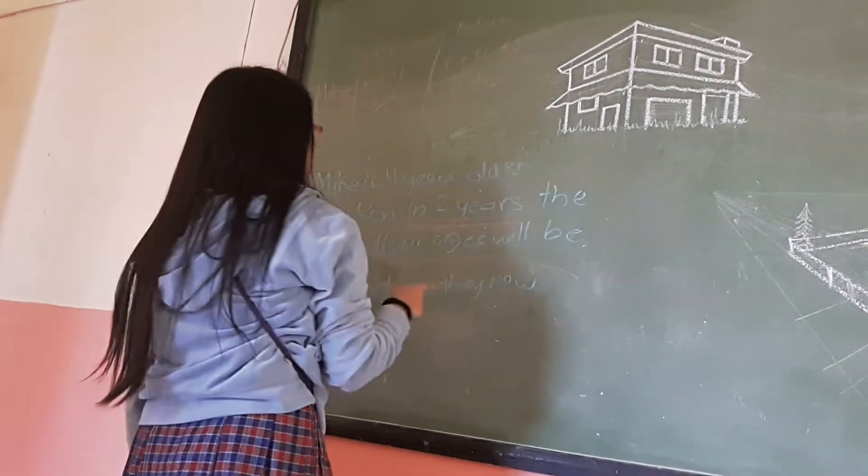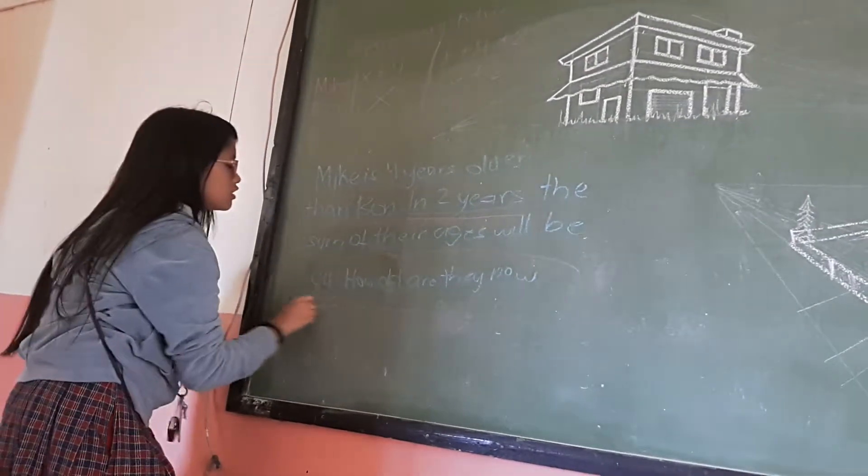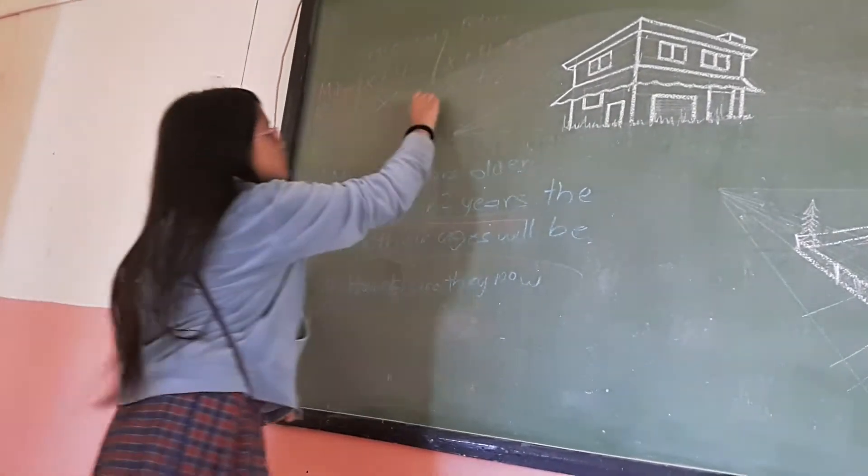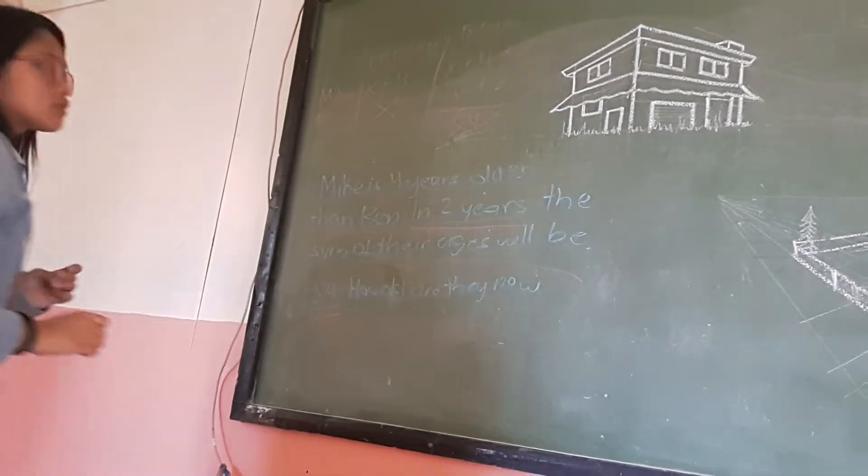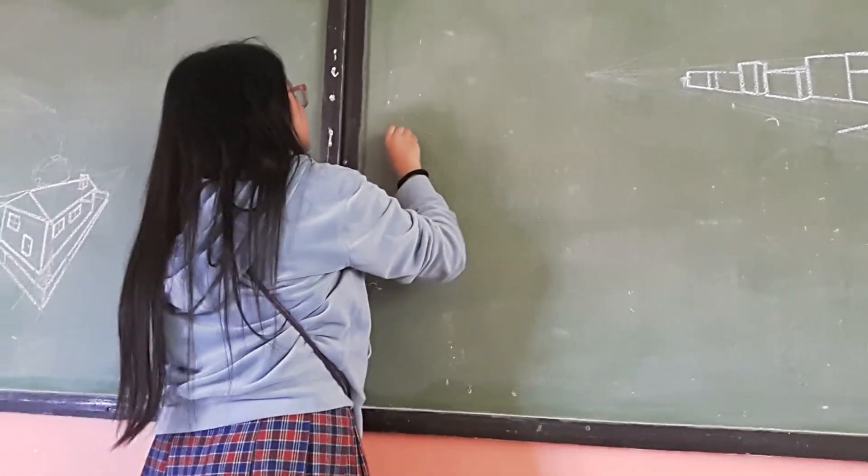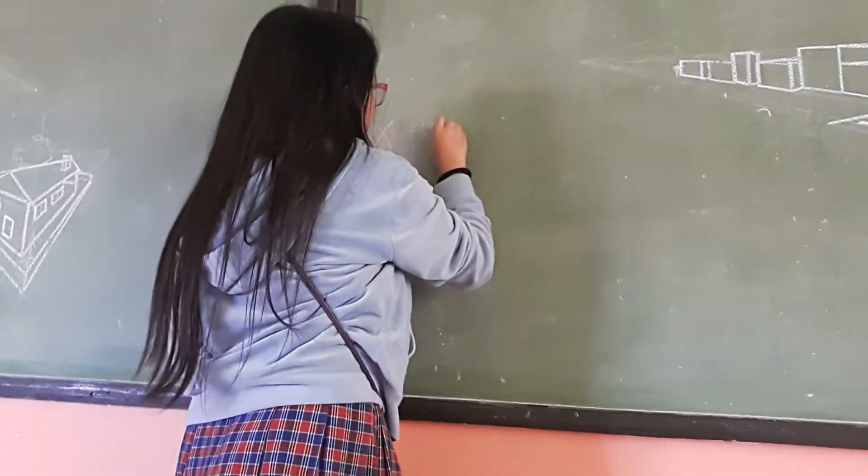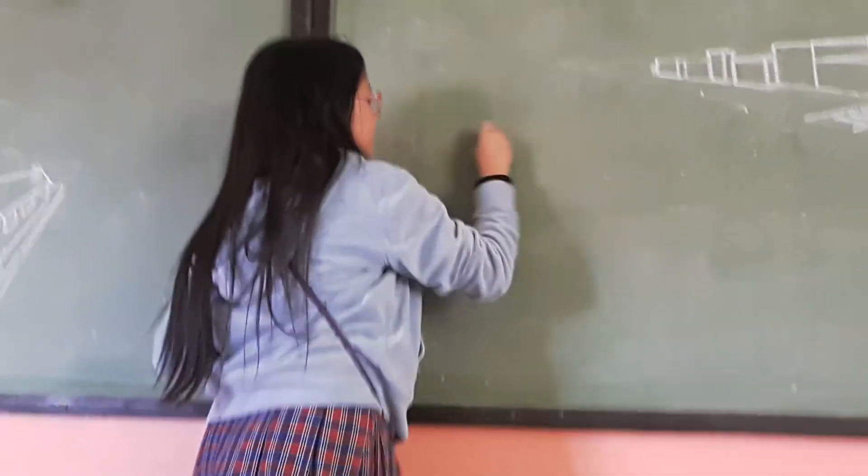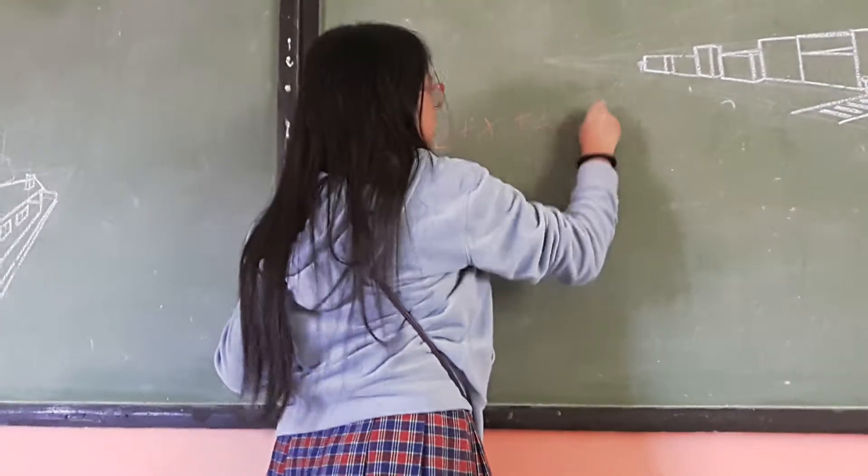And the sum of their ages will be 84. Okay, then we will take a look back at our table. It says X plus 4 plus 2 plus X plus 2 equals 84.